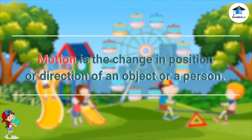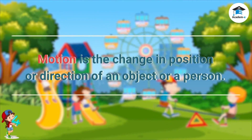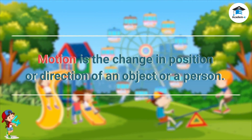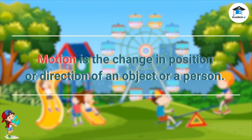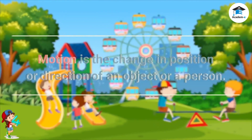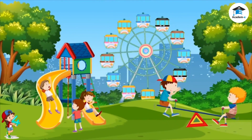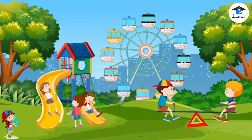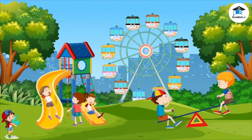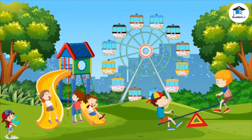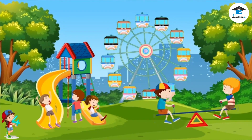Motion is the change in position or direction of an object or a person. Things move in different ways. Some things move up and down, back and forth, or in a circular motion.